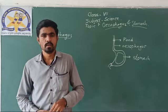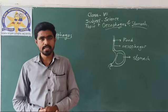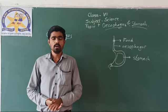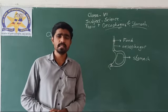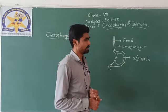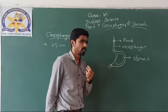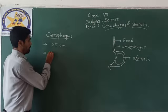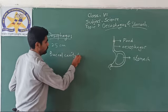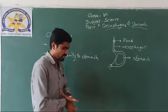Welcome students. In the last video we discussed about the mouth and buccal cavity, and I told you about the importance of saliva — how it allows mixing of food as well as the primary digestion of food by saliva in the mouth itself. Now the next point today that we will discuss is the esophagus. The esophagus is a long tube which is about 25 centimeters in length, and that tube connects the buccal cavity to the stomach.